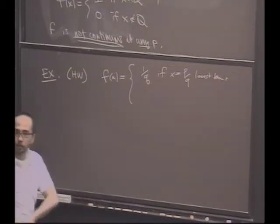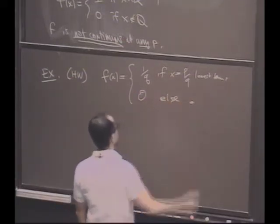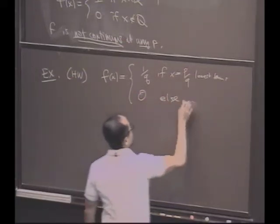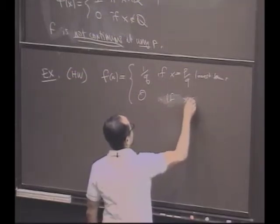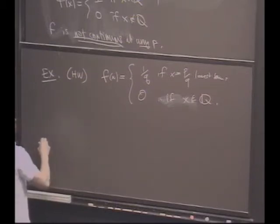And let's define it to be 0 if it's irrational. So, if x is irrational. Well, how's this function behave?